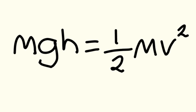So, here is the equation that we wrote down. MGH on the left-hand side, that is the potential energy. And all of that potential energy of the falling object has turned into what we see on the right-hand side of the equation, half MV squared. That is the kinetic energy.